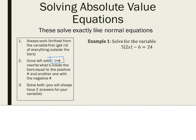So, we're going to start. I want to get this absolute value by itself. So, the first thing I'm going to do is add 6 to both sides. So, I'm going to have 5 absolute value of 2x equals 30.